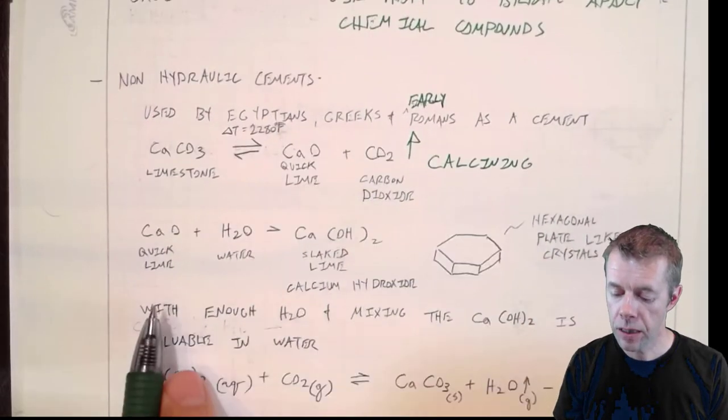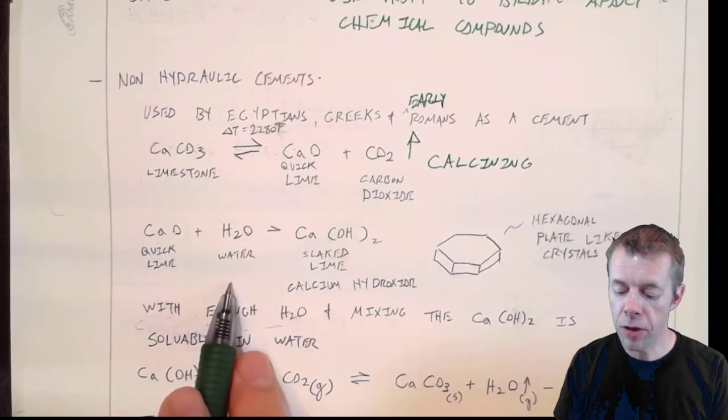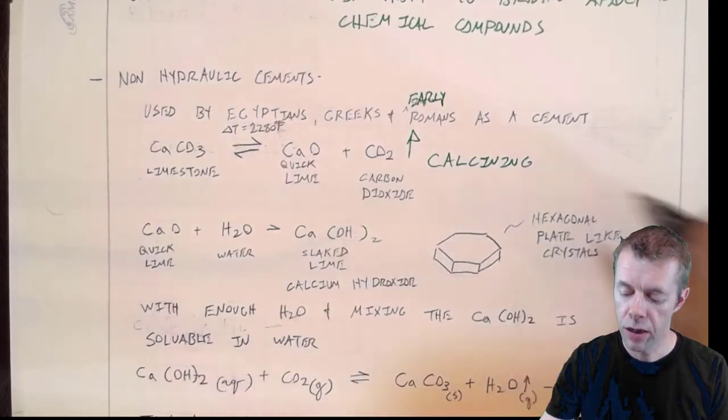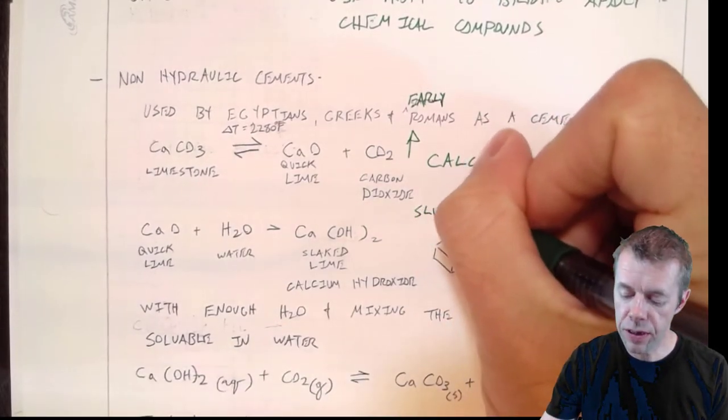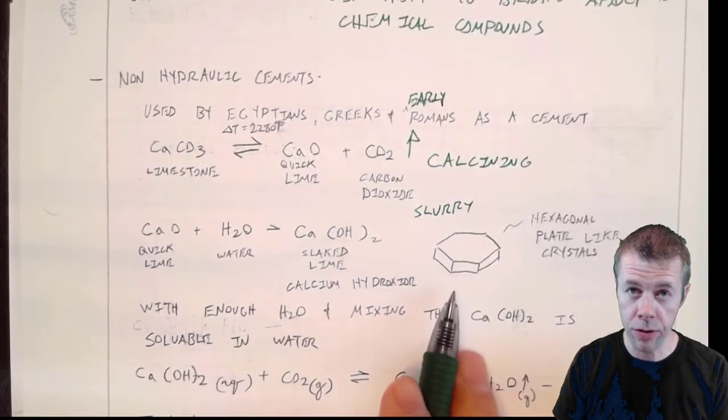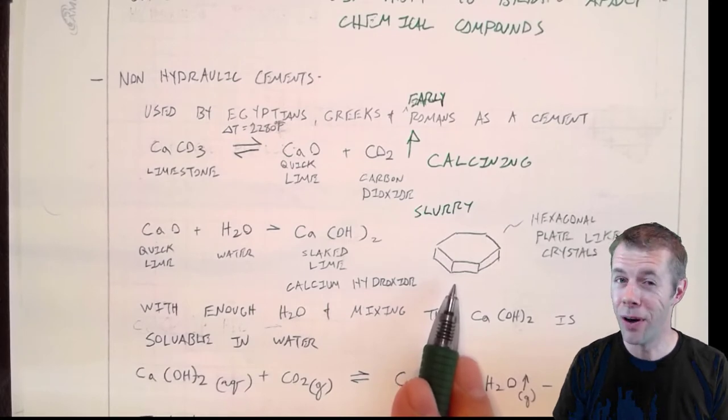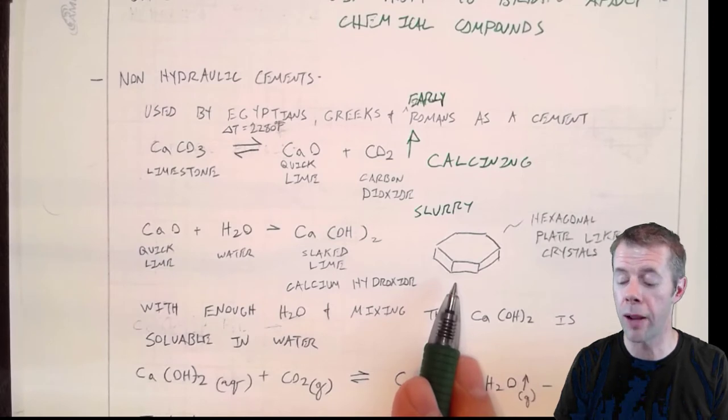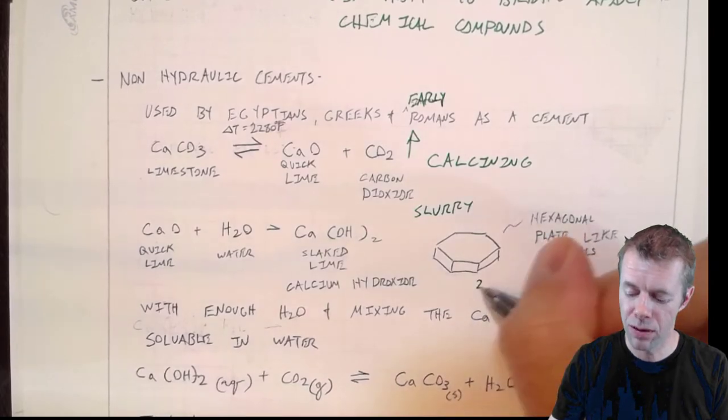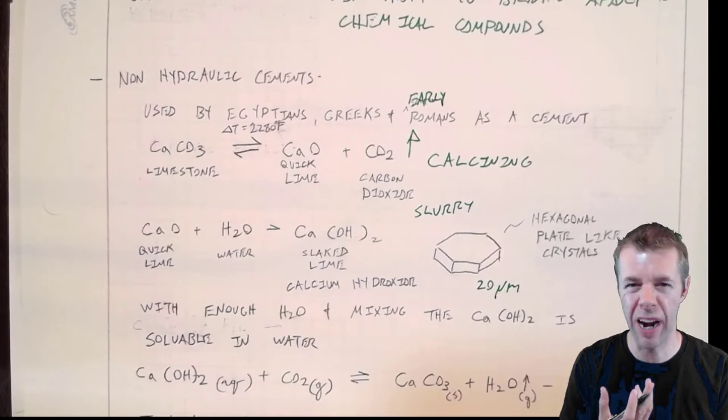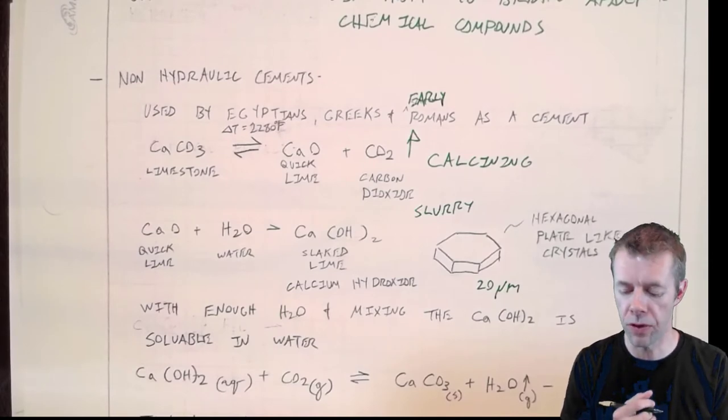You take the lime, you add water to it, and you make something called slaked lime, or calcium hydroxide. This is like a slurry. And these calcium hydroxide crystals, they're plate-like. And I'm drawing it as like a big plate, but it's not big. It's big underneath maybe a scanning electron microscope, or a really high-power optical microscope. These things are maybe 20 microns in size. How big is that? About half the size of a human hair.